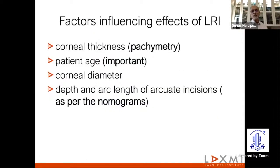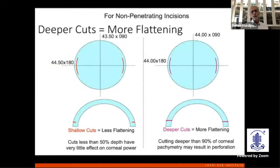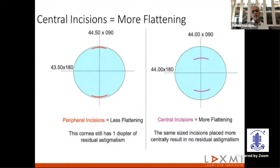Factors influencing the effects of LRI include corneal thickness, patient's age, and corneal diameter. The depth and arc length of the arcuate incision will be calculated as per the nomograms. Deeper cuts will definitely give you more flattening, and more central the cuts, the more will be the flattening.